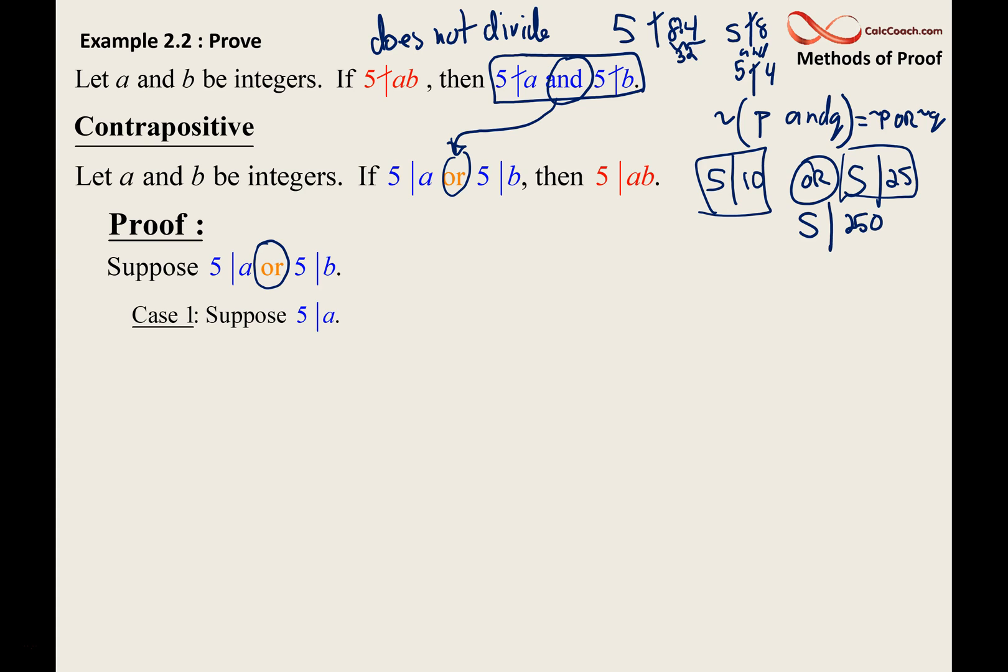Case one: suppose 5 divides a. What does that mean by definition? It means that a can be written as 5 times some integer. So then let's take a look at ab.